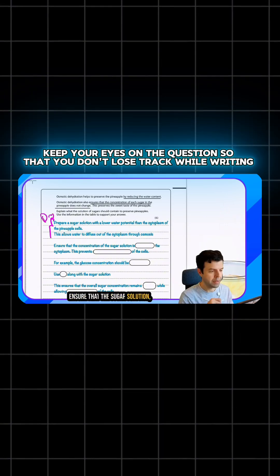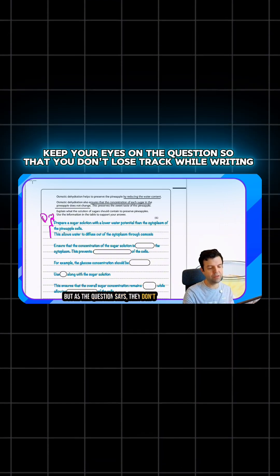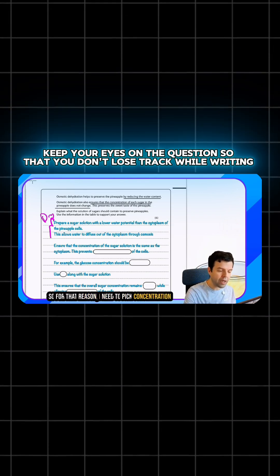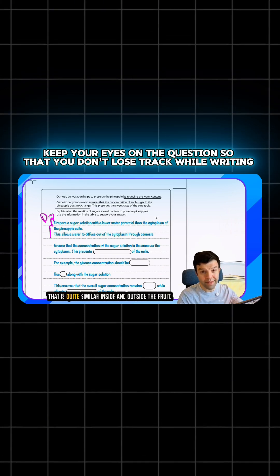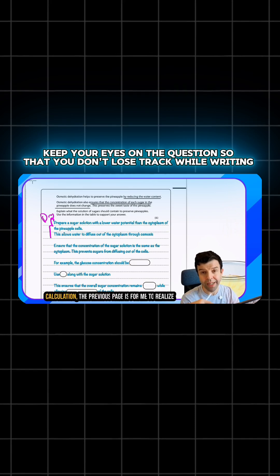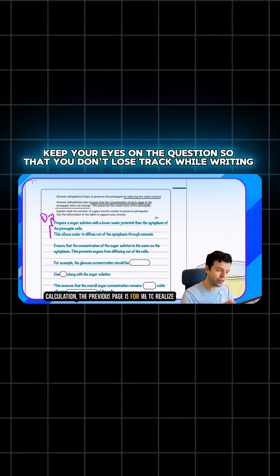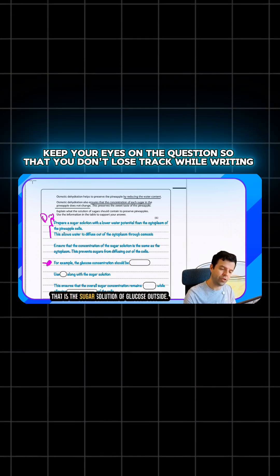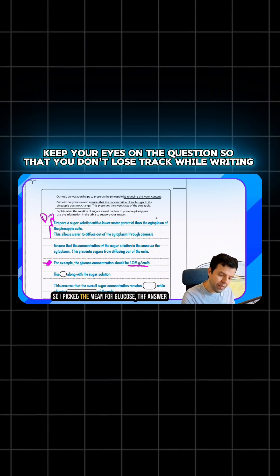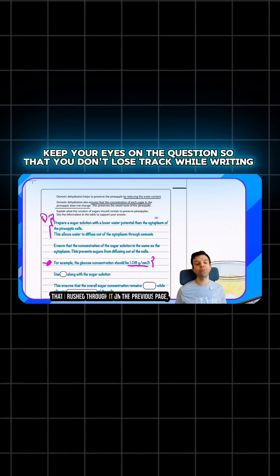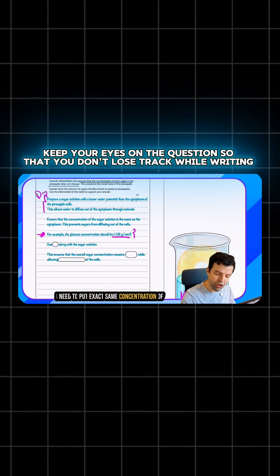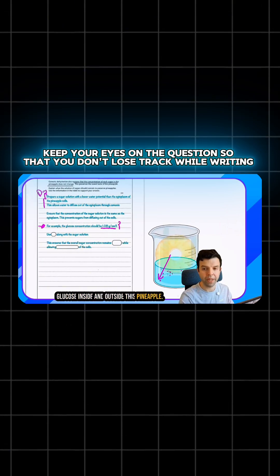Ensure that the sugar solutions, but as the question says, they don't want the sugar solution to change. So for that reason, I need to pick concentration that is quite similar inside and outside the fruit. For instance, the reason why they made me do that calculation on the previous page is for me to realize that is the sugar solution of glucose outside. So I pick the mean for glucose, the answer that I just wrote on the previous page. I need to put exact same concentration of glucose inside and outside this pineapple.